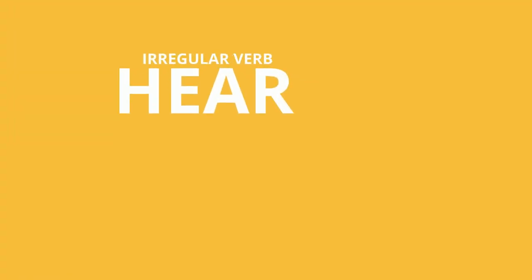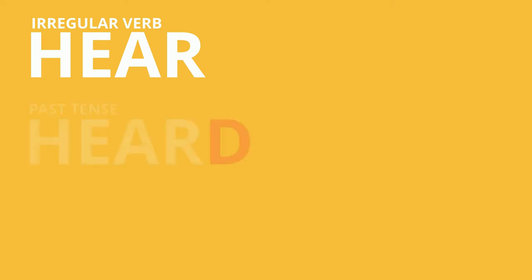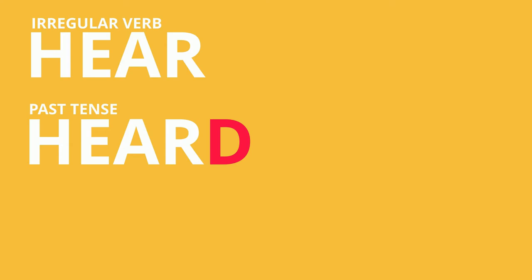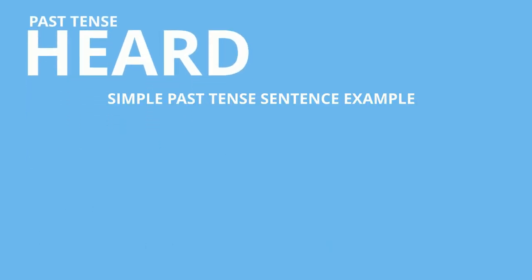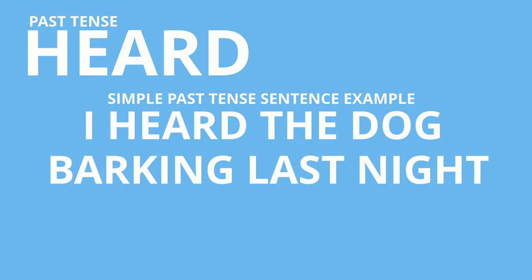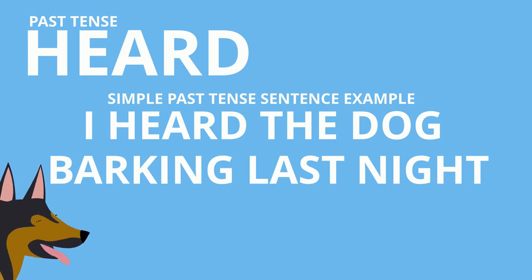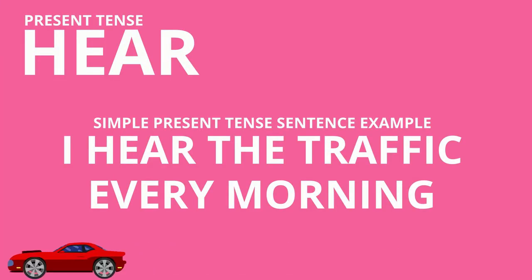The most common verb associated with the ear is the irregular verb 'hear.' It is irregular in the past tense: 'heard' — we add a D onto the end of the word. In the future tense, we simply use 'will hear.' For example, in the past simple tense: 'I heard the dog barking last night.'